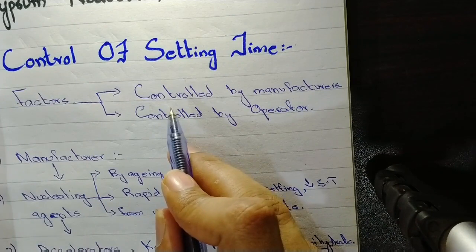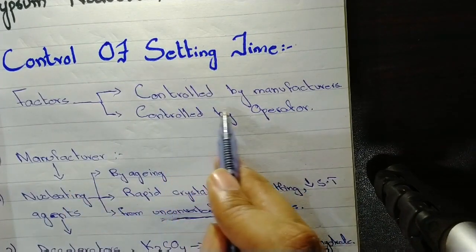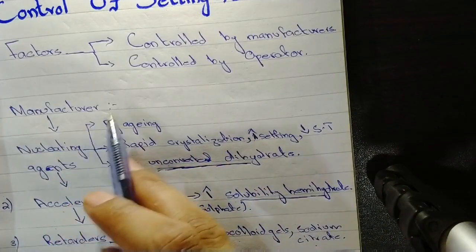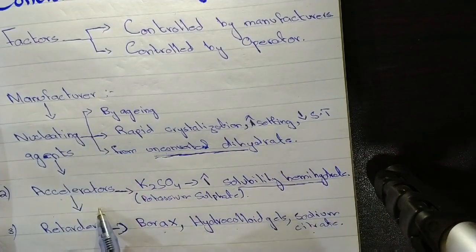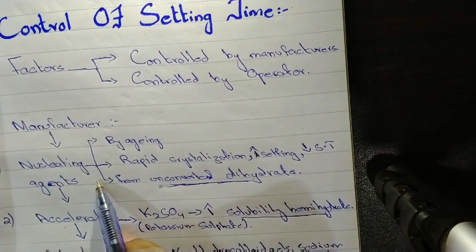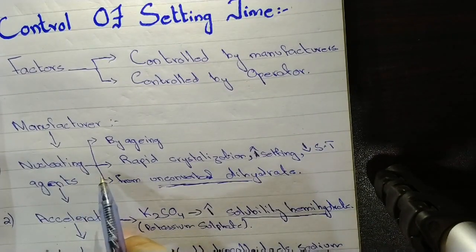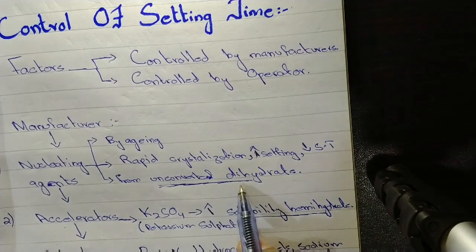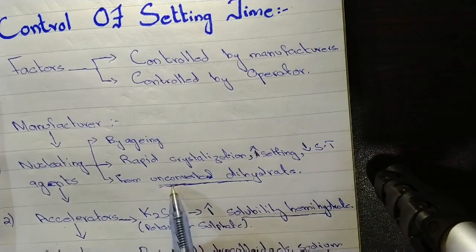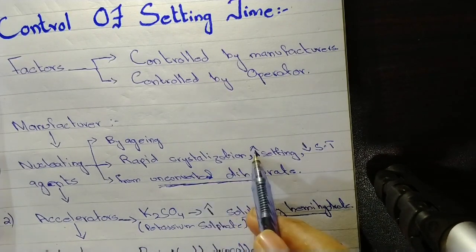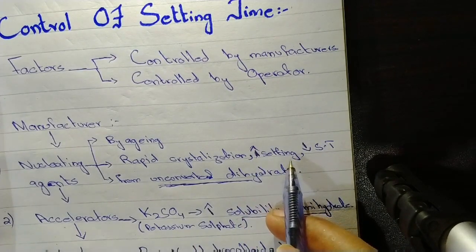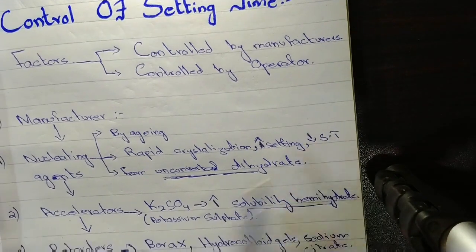Starting from the control of setting time, factors which affect the setting time can be controlled by manufacturers and can be controlled by the operator. The manufacturer can control the setting time through three factors: number one nucleating agents, number two accelerators, and number three retarders. Nucleating agents affect the setting time through aging and through rapid crystallization from unconverted dihydrate. Unconverted dihydrate acts as nuclei of crystallization. As a result, setting accelerates and setting time decreases.